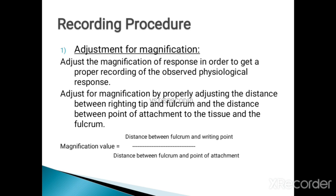Adjust for magnification by properly adjusting the distance between writing tip and fulcrum. The writing tip is attached to the recording drum and records contractions. The magnification formula is: magnification value equals distance between fulcrum and writing point divided by distance between fulcrum and point of attachment.